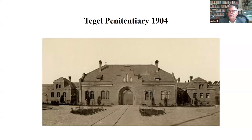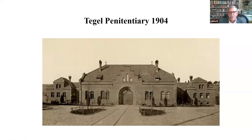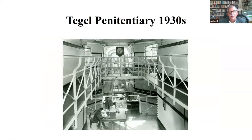Can you see the Tegel Penitentiary in 1904? This is where the novel begins. It's in the northwest of Berlin — a modern penitentiary, modern jail, built at the end of the 19th century. He exits from this building, which looked this way on the inside in the 1930s, but would have looked that way too when Biberkopf was there. Then he takes a streetcar, which is very disorienting for him, into Berlin.